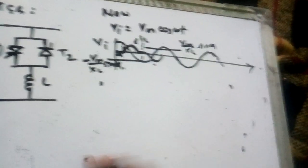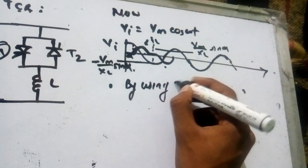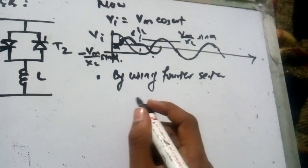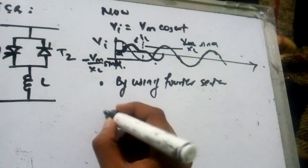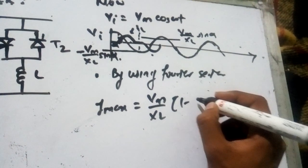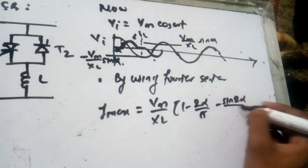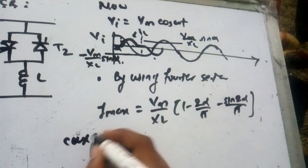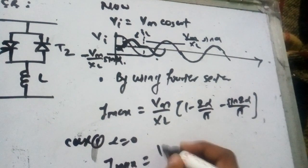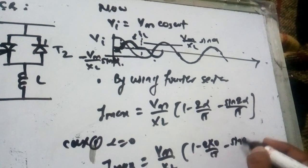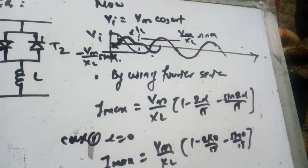By using Fourier series, the maximum value of fundamental current is Vm upon XL times one minus two alpha upon pi minus sine two alpha upon pi. For alpha equal to zero, this becomes Vm upon XL.